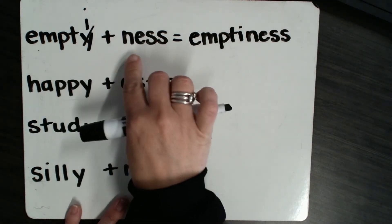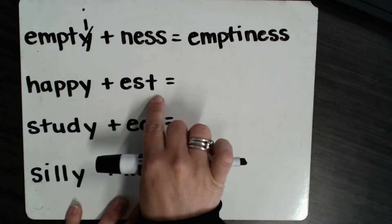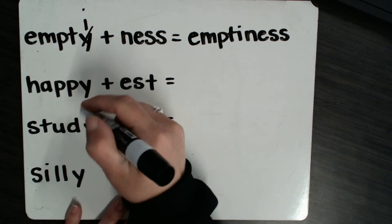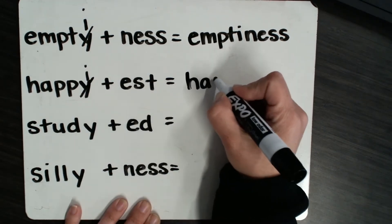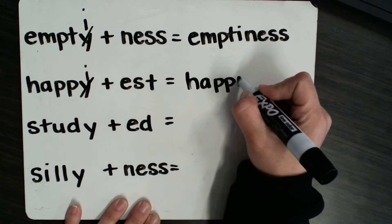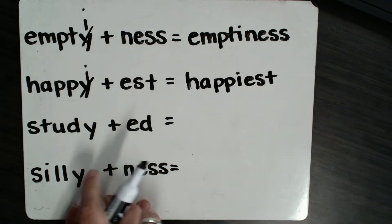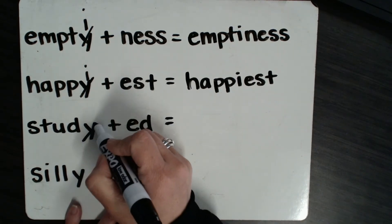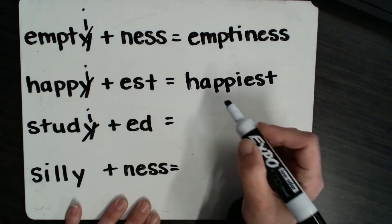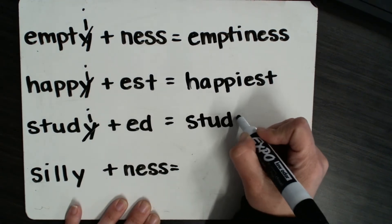Okay, happy plus est - we're going to change the y to an i, and now we have happiest. Okay, study plus suffix ed - we change that y to an i to make studied.